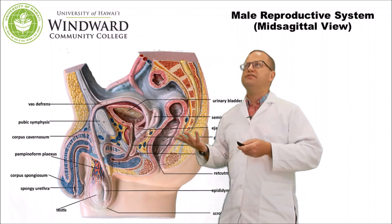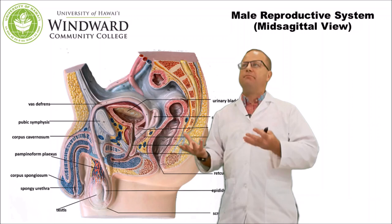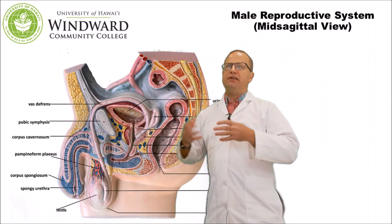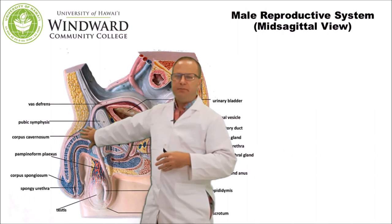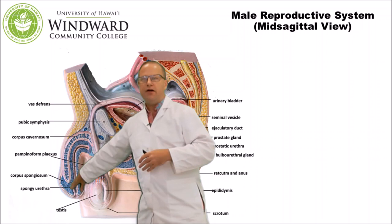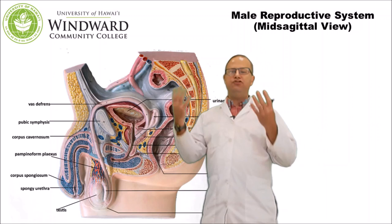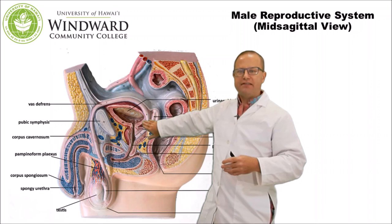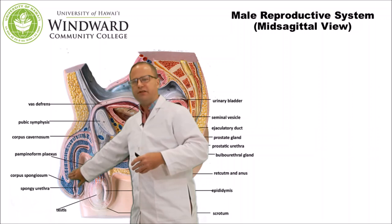The fourth function is erection — we need an erect penis for copulation and intromission to occur. Intromission is inserting the penis into the vagina so that ejaculation can happen. Erection is caused by erectile tissue called the corpora cavernosa as well as the corpora spongiosa, under parasympathetic stimulation. The fifth function is ejaculation: smooth muscle contraction within the ductus deferens and epididymis advances spermatozoa through the vas deferens into the prostatic urethra and eventually out the spongy urethra into the vagina.